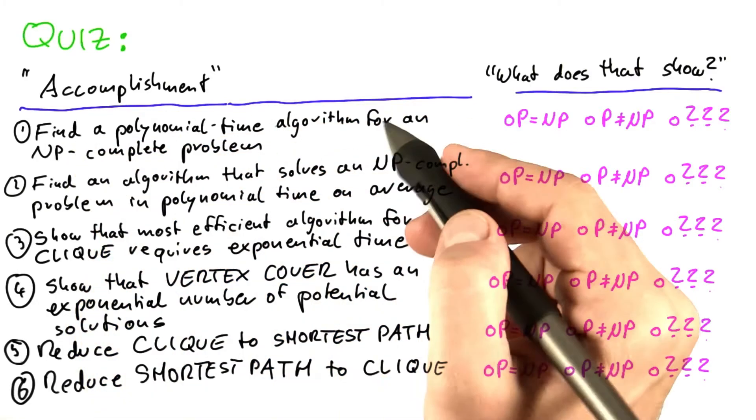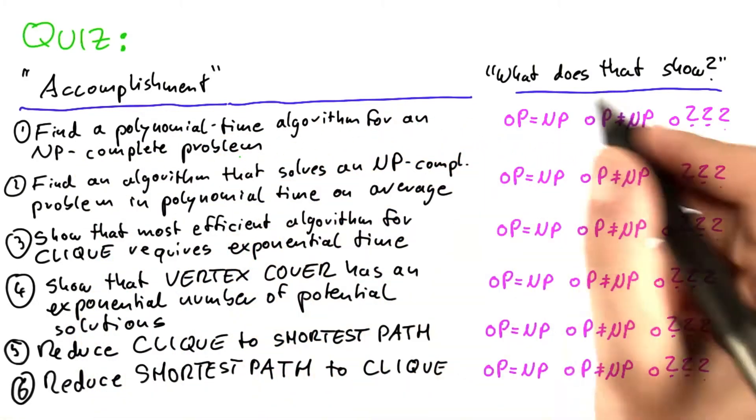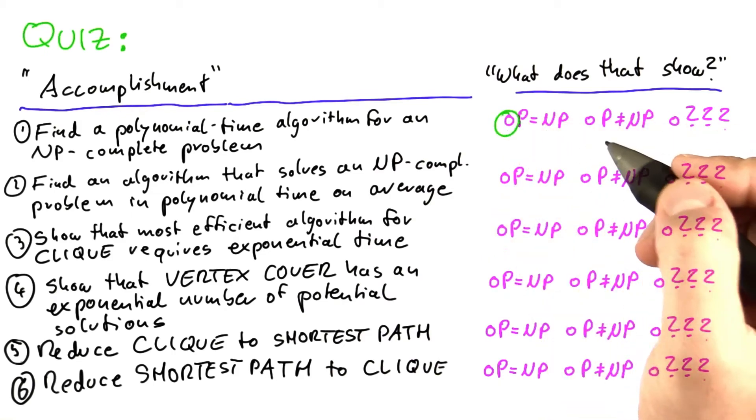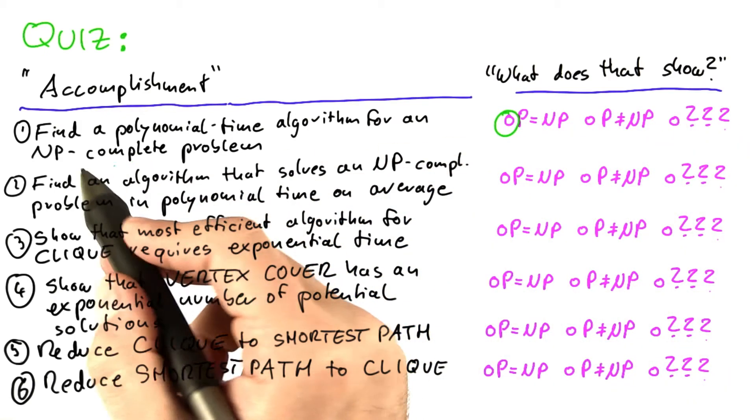So let's go through them one by one. Finding a polynomial time algorithm for an NP-complete problem, yes, that would show that P equals NP because the problem is NP-complete.